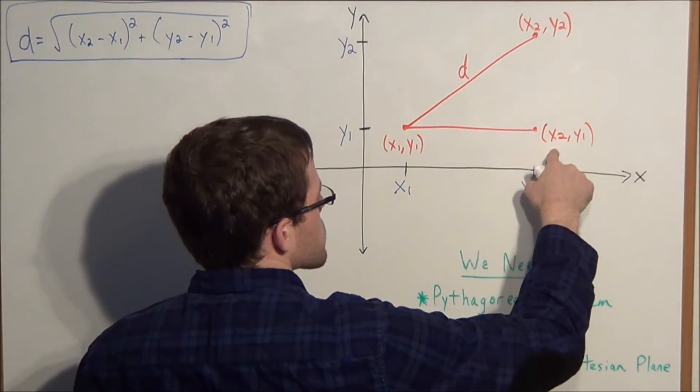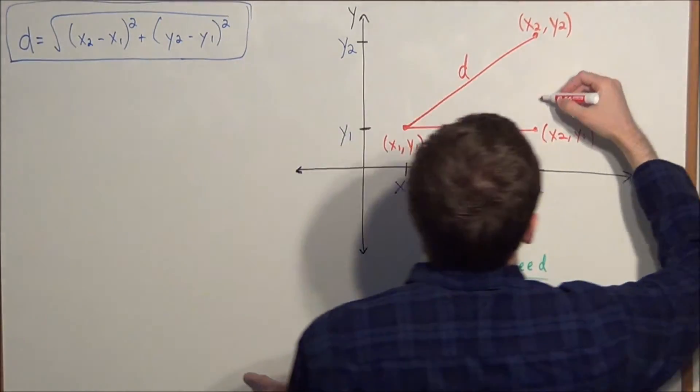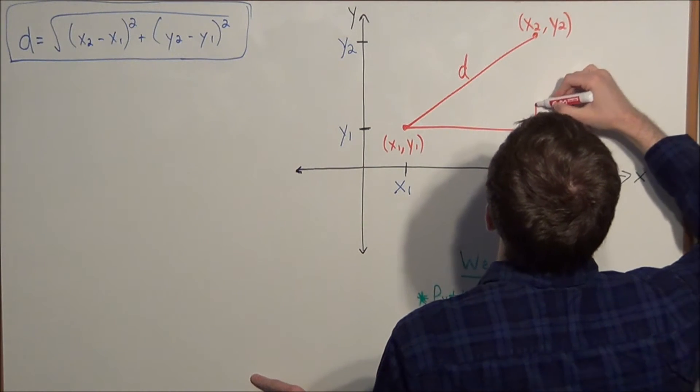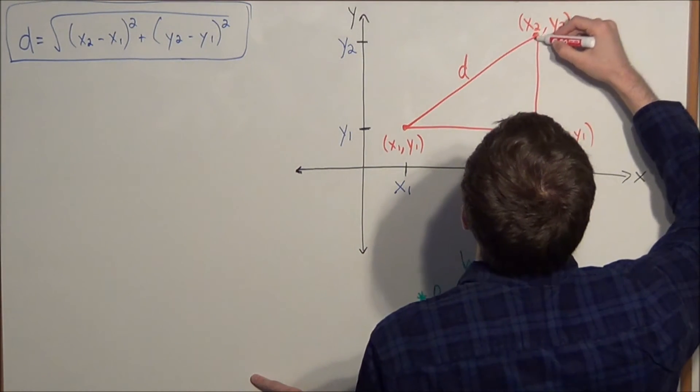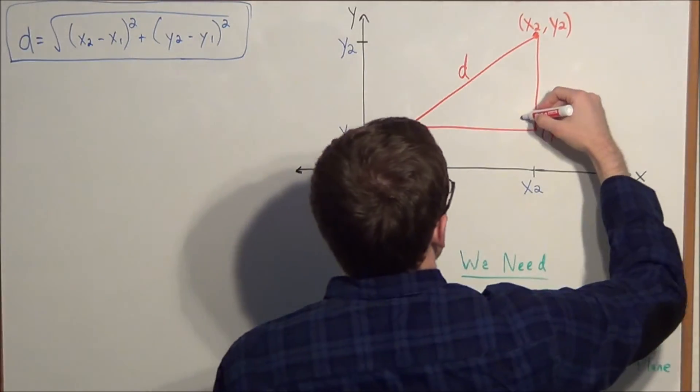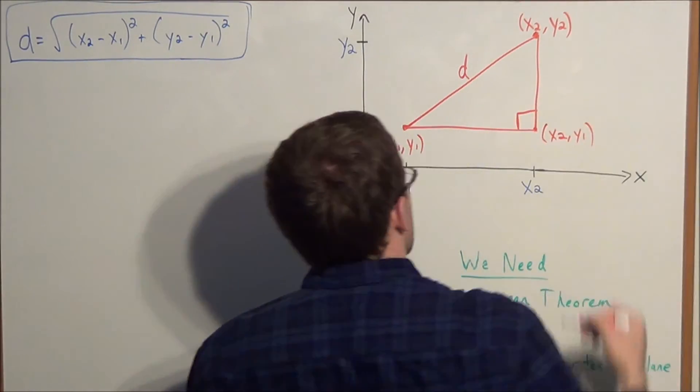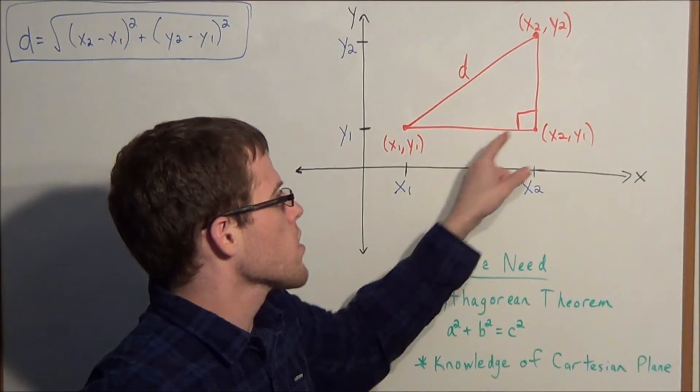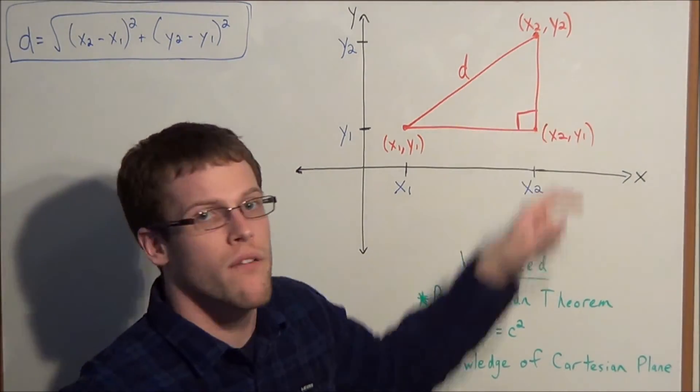So I want to trace a path from (x2, y1) to the point (x2, y2). And now we've just created a right triangle. Except now next I want to find the lengths of these sides of the right triangle.